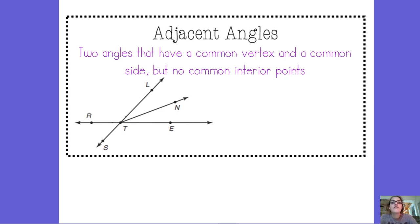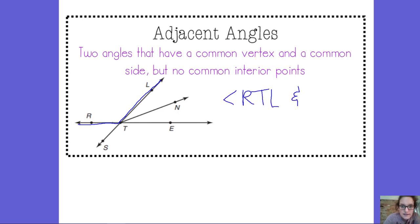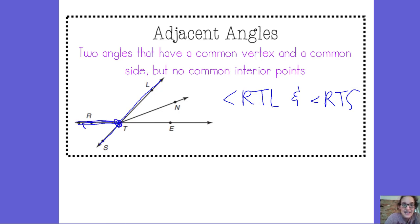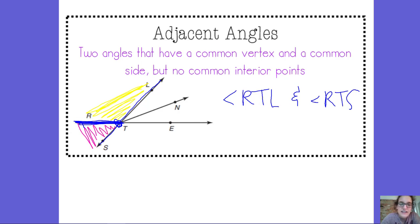If two people are adjacent to each other, they're next to each other. So an example of a pair of adjacent angles in this situation would be angle RTL and angle RTS. They have the same vertex T, they have a common side RT, but no common interior points. These are all the interior points for angle RTL, and these are all the interior points for angle RTS, and none of those points are in common with each other.